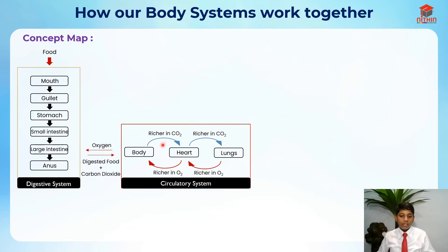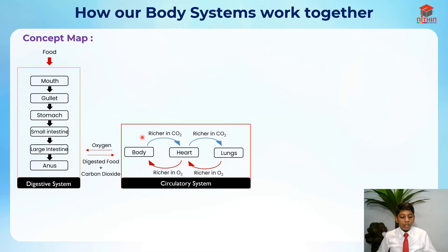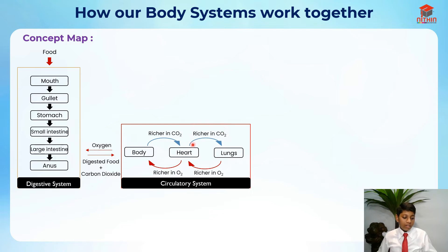The body uses some of the oxygen and digested food to respire, so it becomes richer in carbon dioxide. The body is inclusive of all body parts, so it uses most of the oxygen. The blood then goes back to the heart, which again uses some oxygen to respire and pump blood, making this the richest point in carbon dioxide. It then goes back to the lungs where carbon dioxide is exhaled.